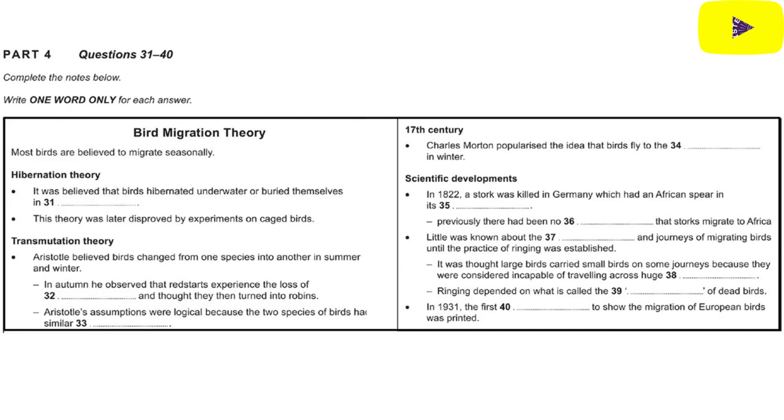The most bizarre theory was put forward by an English amateur scientist, Charles Morton, in the 17th century. He wrote a surprisingly well-regarded paper, claiming that birds migrate to the moon and back every year. He came to this conclusion as the only logical explanation for the total disappearance of some species.